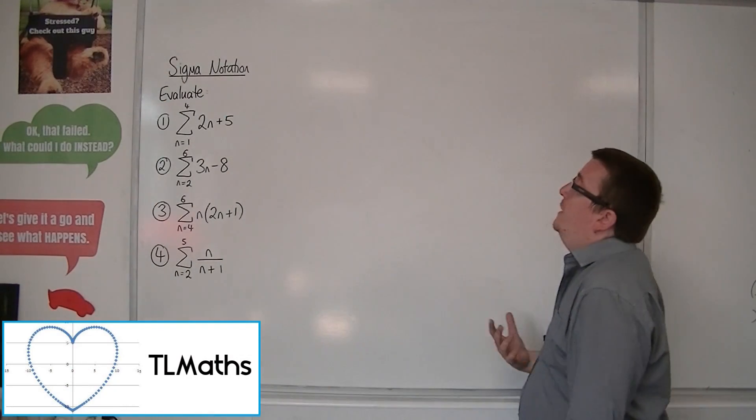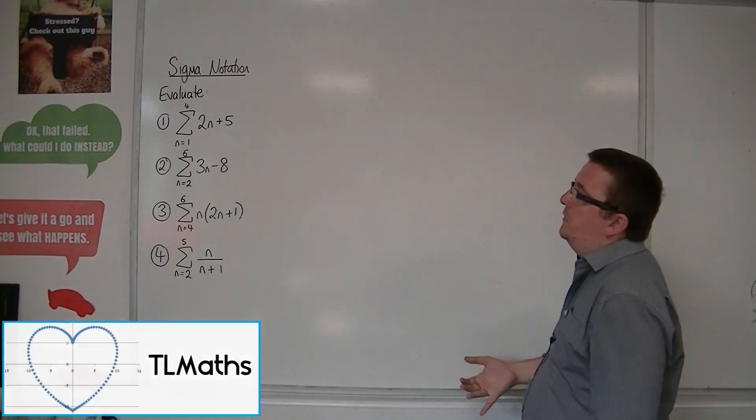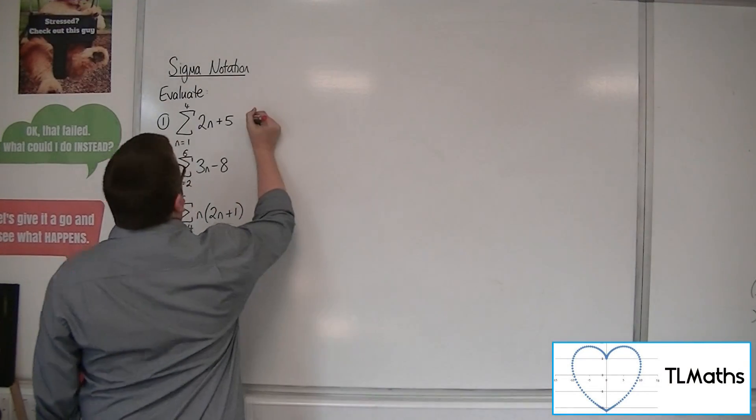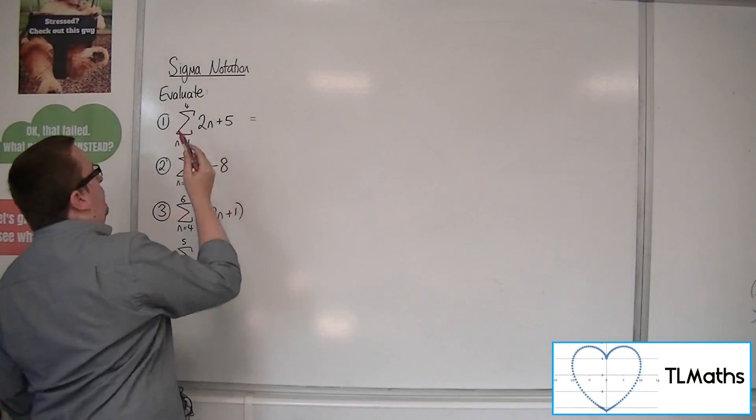OK, so let's say I want to evaluate each of these series. So for this first one, we have 2n plus 5 going from n is 1 up to 4.